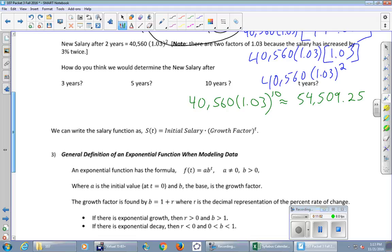And that's really easy to just type on the calculator. Can somebody give us an answer here? 54,509. That's the salary 10 years down the road. Again, compare how easy that was. You just type it into the calculator in one fell swoop, as opposed to filling in the first nine rows of that table in order to get the 10th row.